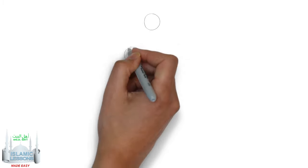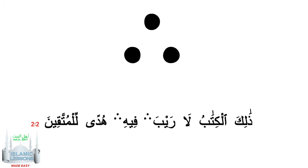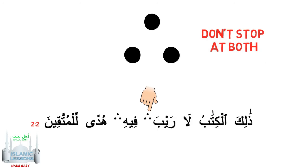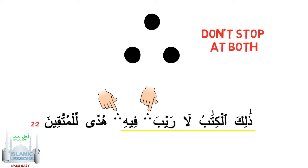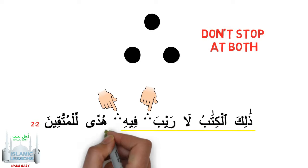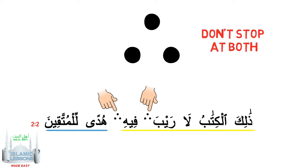If you see this symbol, it means if you stop at one of these three dots, you cannot stop at the other. For example, I will read this verse as 'Dhalikal kitabu la rayb' and then read 'feehi hudal lil muttaqeen,' or I can read it as 'Dhalikal kitabu la rayba feeh' and then read 'hudal lil muttaqeen.' I only stopped at one or the other but not at both.